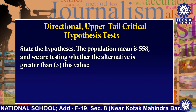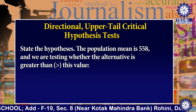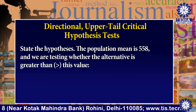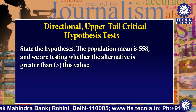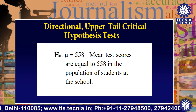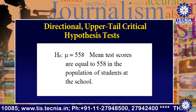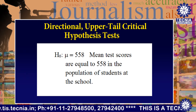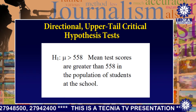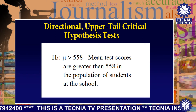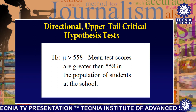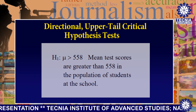Now I am explaining Step 1 of the hypothesis testing. Step 1 is concerned with stating the hypothesis. The population mean is 558 and we are testing whether the alternative is greater than this value. The null hypothesis H0: mu equal to 558, that is, mean test scores are equal to 558 in the population of students at the school. The alternative hypothesis H1: mu greater than 558, that is, mean test scores are greater than 558 in the population of students in the school.